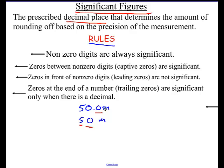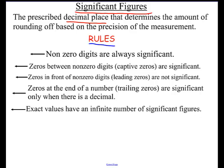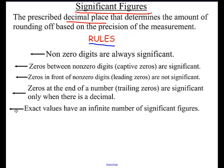Rule five: exact values have an infinite number of significant figures. For example, one foot equals 12 inches — that's an exact value. I don't worry about this number having one significant figure and that having two; the answer is they have an infinite amount. This will become more important when we start doing conversions.